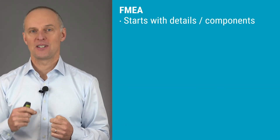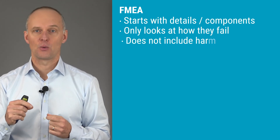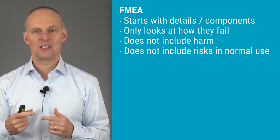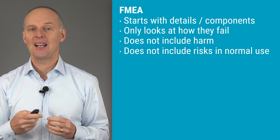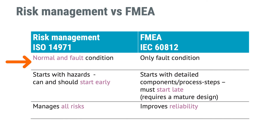Having looked at these examples, you may have noticed that FMEA starts with details or components — you look at how specific components or process steps could fail, and there was no mention of harm in this FMEA. And since we've only looked at failures, risks relating to normal use have not been included. Let's compare this with ISO 14971 risk management and highlight some of the major differences. FMEA will only consider risks arising from fault conditions, and since it starts with component or process step failures, by definition it won't be possible to start until the design or production processes are fairly well known — meaning in a late stage.